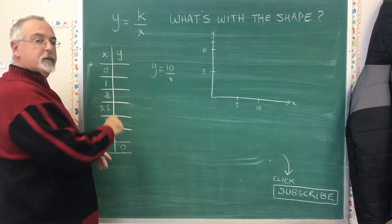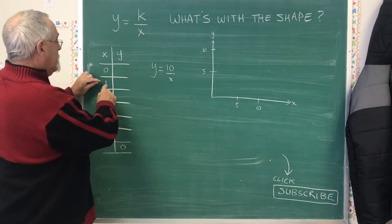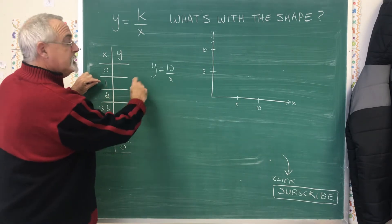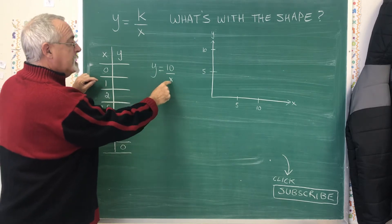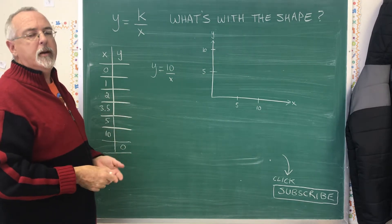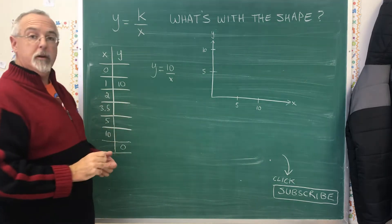I'm going to skip x equals 0 for now, and I'm going to do this quite quickly because you don't have to see me show the work to know that if x equals 1, and I plug that in, I'm getting y equals 10 divided by 1. But 10 divided by 1 is 10, so that's quite an easy one to put in.